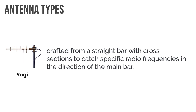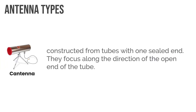A Yagi antenna has cross sections on a straight bar to catch specific radio frequencies in the direction of the main bar. And then finally there's the cantenna, which is highly directional — it focuses signal along the direction of the open end of the tube. If that looks like the popular potato chip can in the US, that's because it's very much that shape. You'll find recipes on the Internet for making a cantenna from a Pringles can.